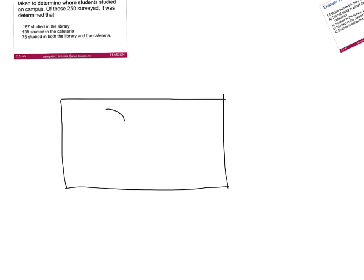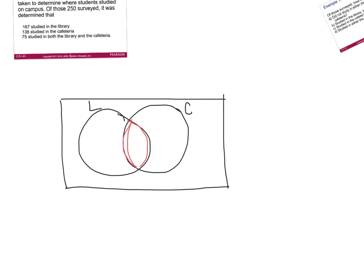We need to draw our universal set, which is going to be all the students surveyed about where they study. Then we have one set for the library and one set for the cafeteria. The outside represents students that study somewhere besides the library and the cafeteria. In general, you want to start with the middle region — the students that studied in both the library and the cafeteria. According to the survey, 75 students studied in both, so that goes in the middle.